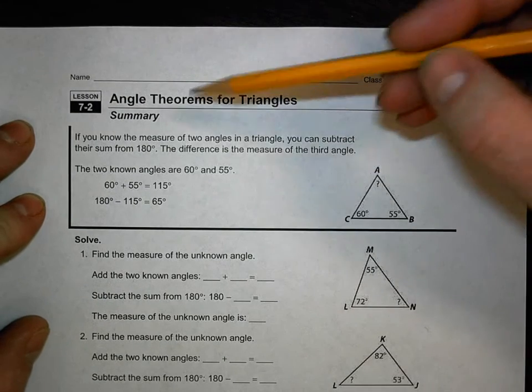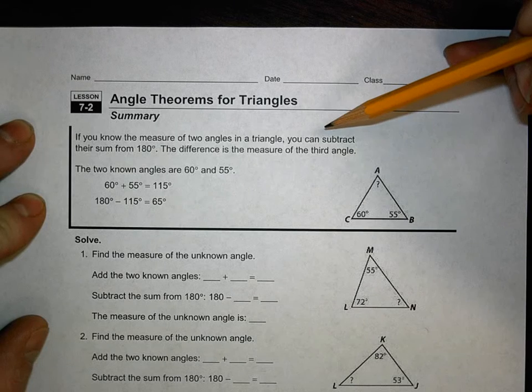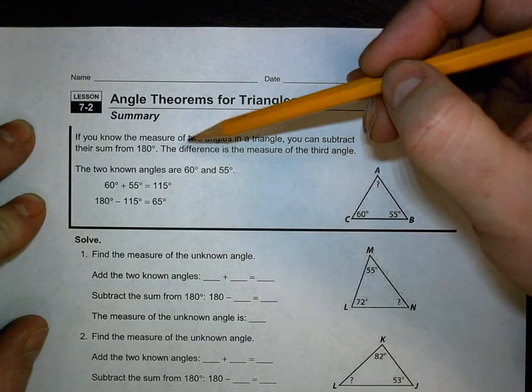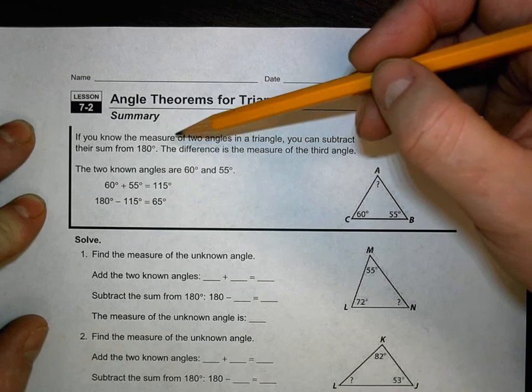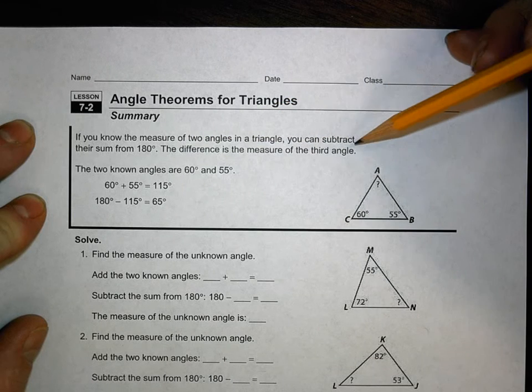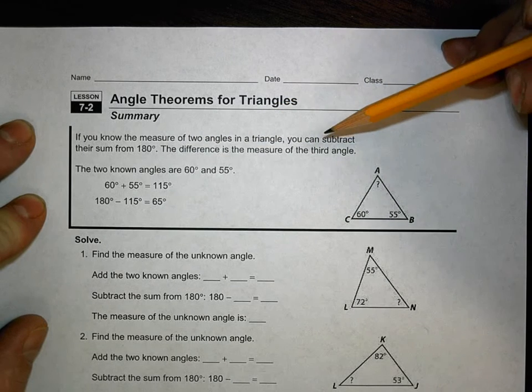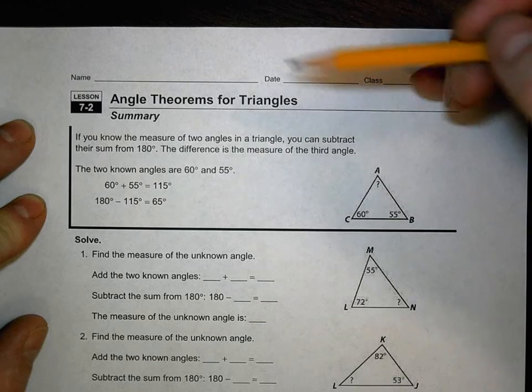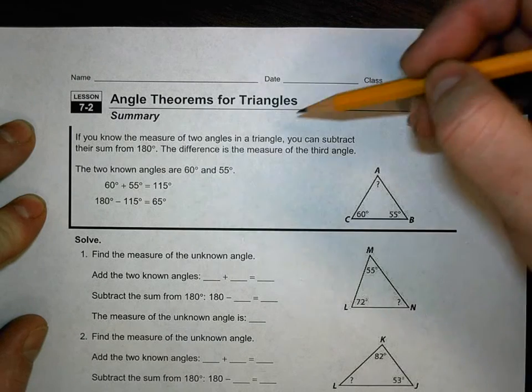It says, if you know the measure of two angles in a triangle, you can subtract their sum from 180. The difference is the measure of the third angle. That's called the triangle sum theorem, the TST, the triangle sum theorem.